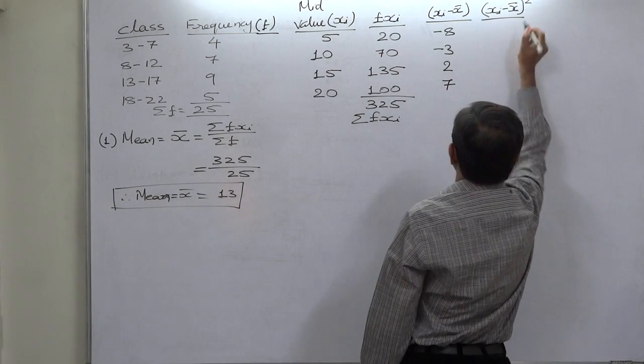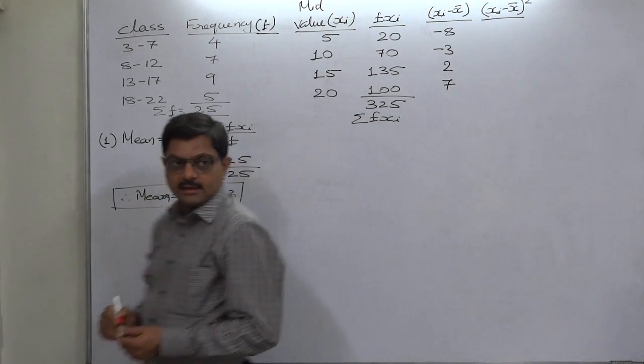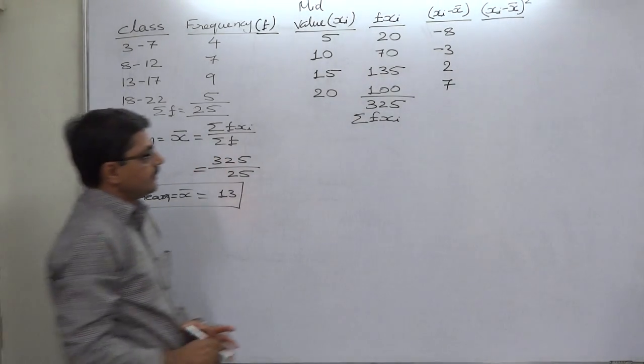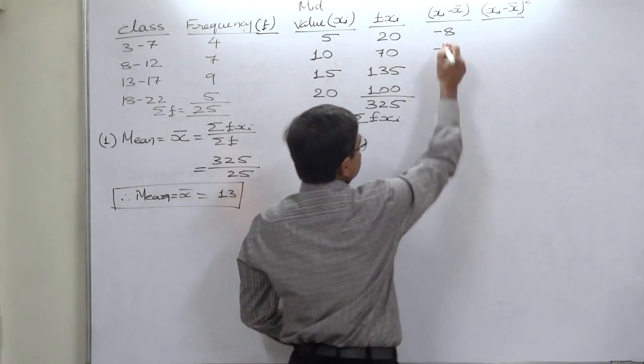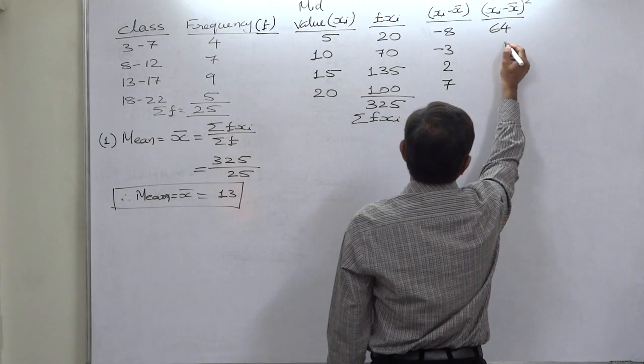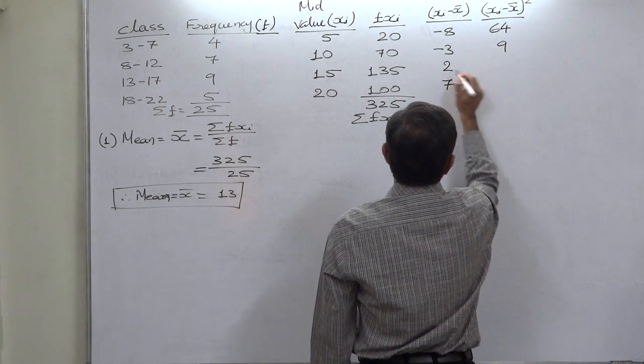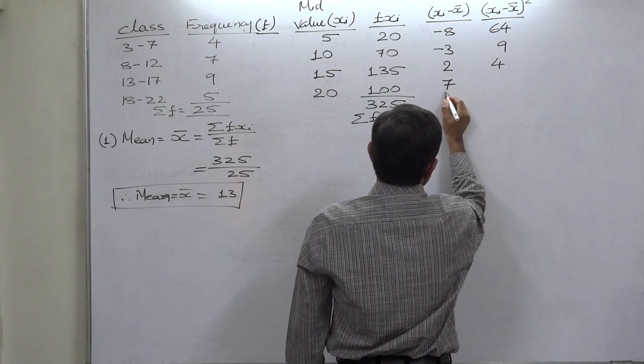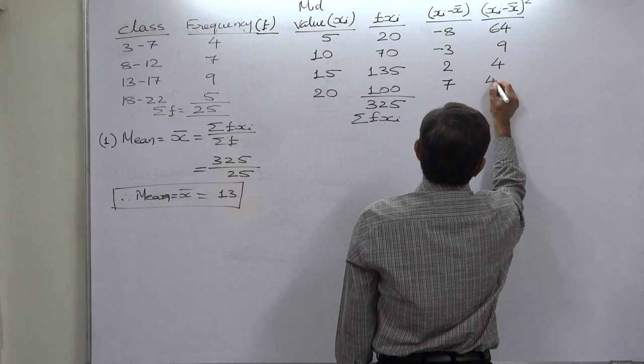Now we need x minus x bar the whole square. Minus 8 square is 64, minus 3 square is 9, 2 square is 4, and 7 square is 49.